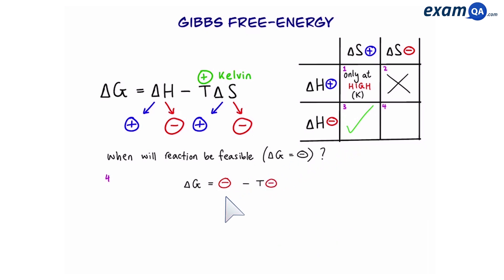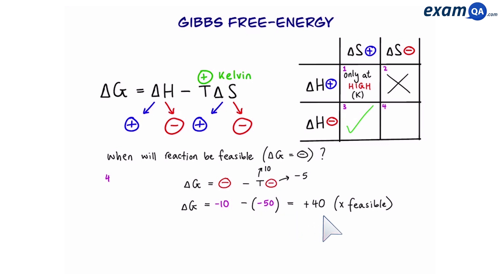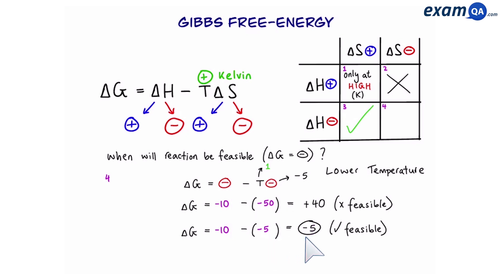Scenario four: negative delta H and negative delta S. Using example numbers — delta H is minus 10, temperature is 10, delta S is minus 5 — T delta S becomes minus 50, so we have minus 10 take away minus 50, which gives plus 40, meaning not feasible. However, if we lower the temperature to 1, we get minus 10 take away minus 5, which gives minus 5 — feasible. So in scenario four, when both delta H and delta S are negative, the reaction will only be feasible at low temperatures.